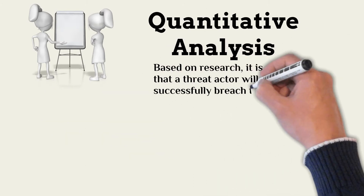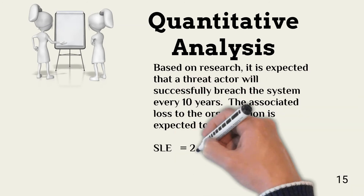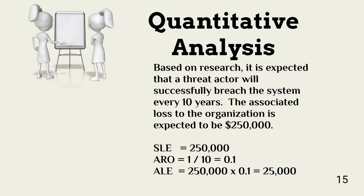In this example, the assessor determined that a threat actor will probably successfully breach the assessed system. The SLE would be about $250,000 — current controls would help limit the impact. The ARO is 0.1. Multiplying the SLE by the ARO gives $25,000, which is the annual cost of the attack. If the annual cost of controls or cyber insurance meaningfully exceeds $25,000, then management is likely to accept the risk.